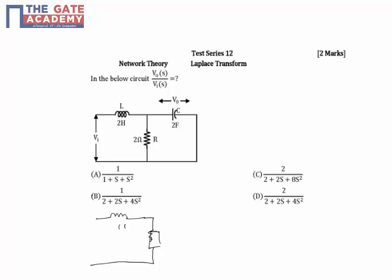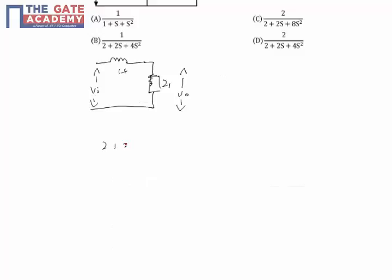This is 2 Henry. This is Vi. Now we need to determine what is this Z1. Let us keep that as Z1, and this is V0, the voltage across Z1. Z1 is the parallel combination of the resistor and the capacitor.